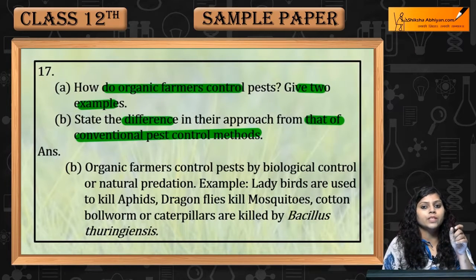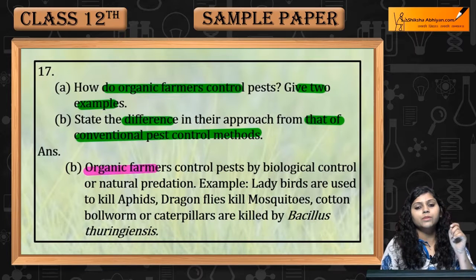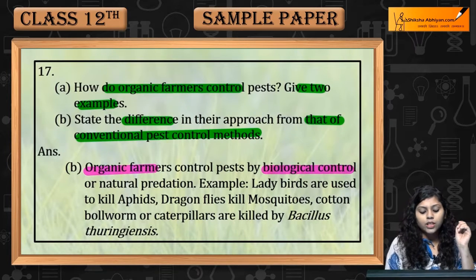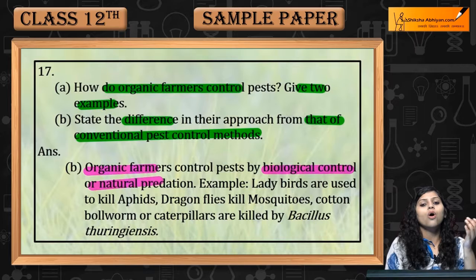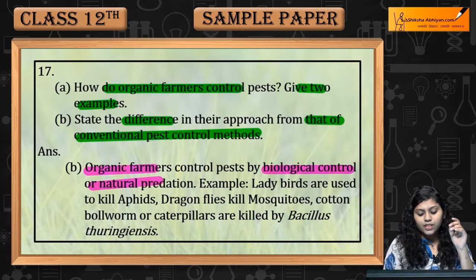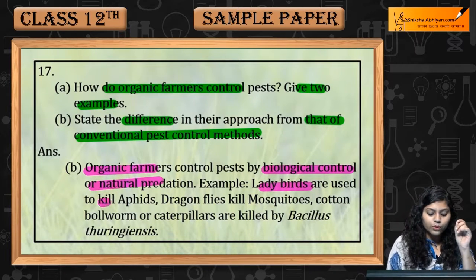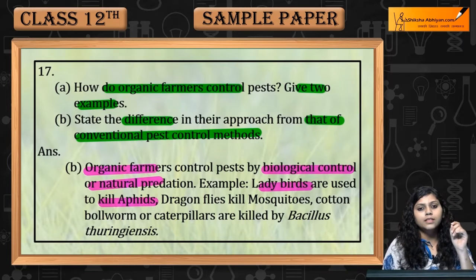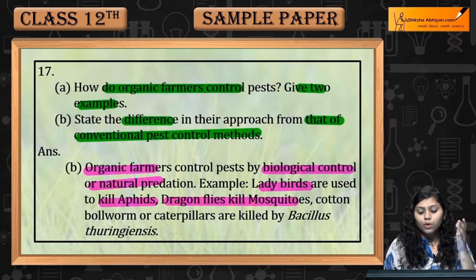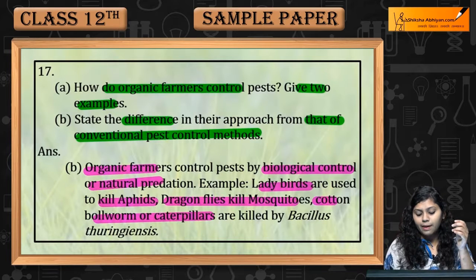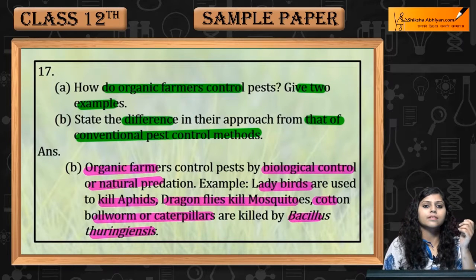Organic farmers control pests by biological control and natural predation. Jaise ki ladybirds use karte hain to kill aphids, dragonflies to kill mosquitoes, aur cotton boll worm and caterpillars are killed by Bacillus thuringiensis.